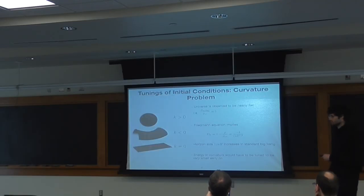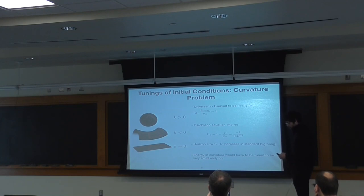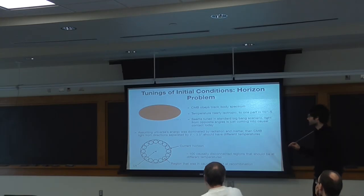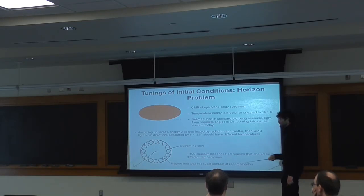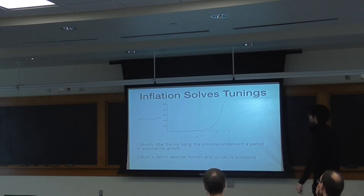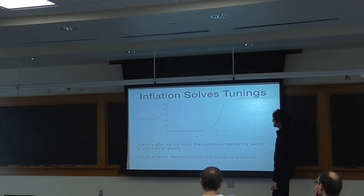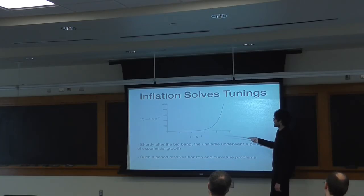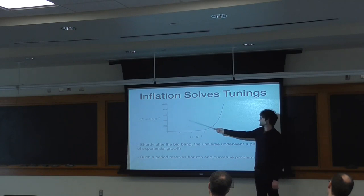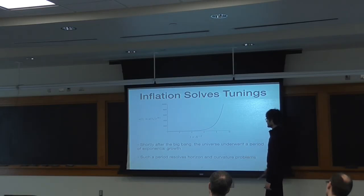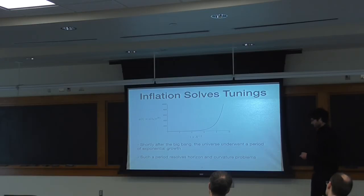It turns out that inflation elegantly solves both of these problems in one fell swoop. The idea is that before radiation domination, shortly after the Big Bang, the universe underwent a period where the scale factor goes like an exponential. It grows super rapidly. This rapid expansion explains the horizon and curvature problems. The regions in the sky that look like they're just coming into causal contact today were actually in causal contact at an earlier point — right before inflation started, the entire observable universe was in causal contact and had a chance to thermalize. It's only after inflation, which decreases the horizon size because of the rapid expansion, that it pushes each of these regions outside of each other's causal horizons.